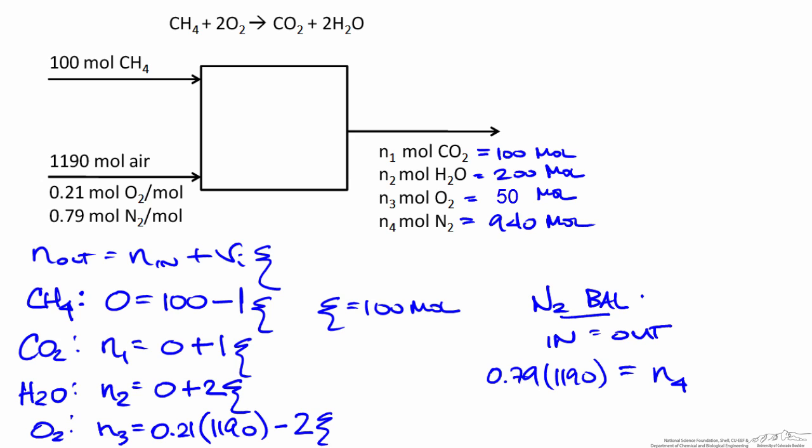In this example of the complete combustion of methane, we've shown that we can relate the amount of air fed to the reactor for a given amount of fuel using the percent excess. And we can relate the reactor output to what's being fed through stoichiometry, the extent of reaction, and molecular species balances.